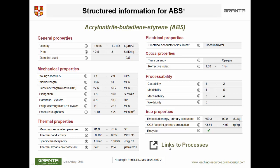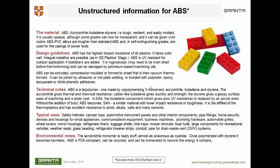At the bottom of the record are links to the processes that can shape, join, or finish ABS. Now there is more to the record than that — there is also what we call unstructured data. Unstructured data is also useful in selection but can't be stored in tables of numbers. An image is unstructured data for ABS and tells you a lot: it can be coloured, it can be moulded, it's non-toxic since kids chew on these things, and it's pretty durable. Unstructured data also includes a description of the material, design guidelines, hints about how to use it, and technical notes.